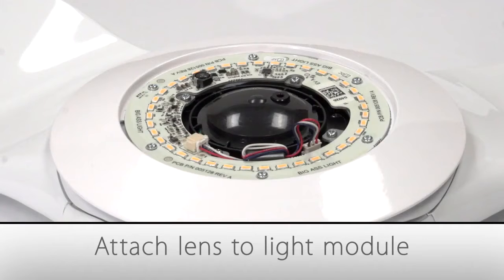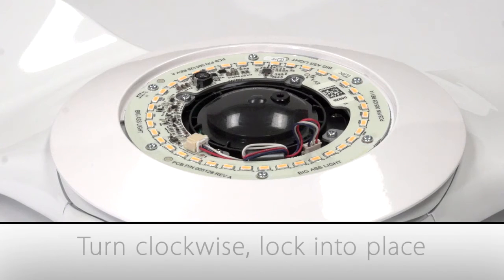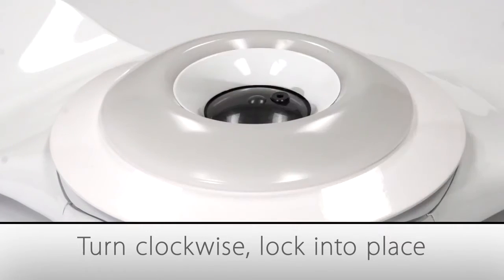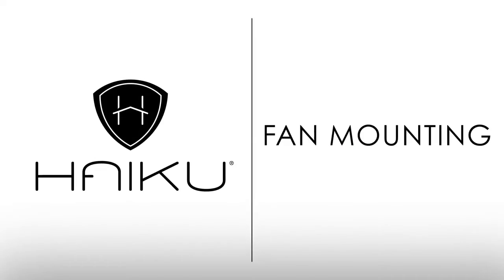Next, attach the lens by aligning the four slots on the lens with the four small round tabs on the bottom of the fan hub. Turn the lens clockwise to lock it into place. You are now ready to hang your Haiku fan using the standard mount.